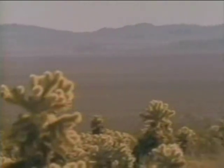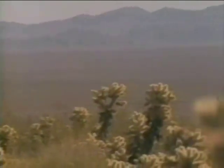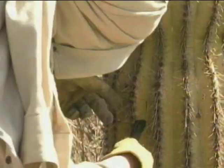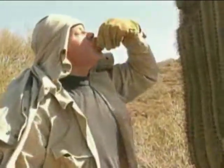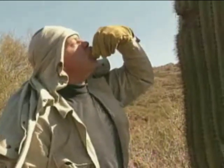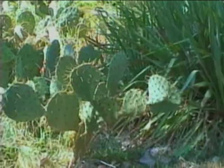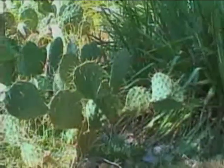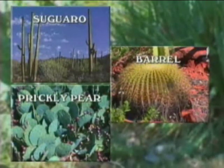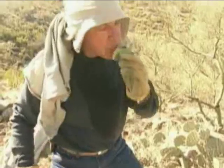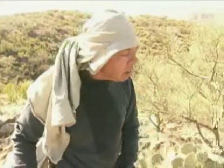Cactus will provide water in amounts sufficient to sustain life in a dryland situation. Contrary to popular belief, cacti will not yield flowing water — moisture must be sucked from the meat of the plant. However, an exceptional amount of fluid is held within cactus plants. Those producing the greatest amounts of moisture for consumption are the saguaro, barrel, and prickly pear. The meat of the cactus can also provide some nutritional value if eaten.